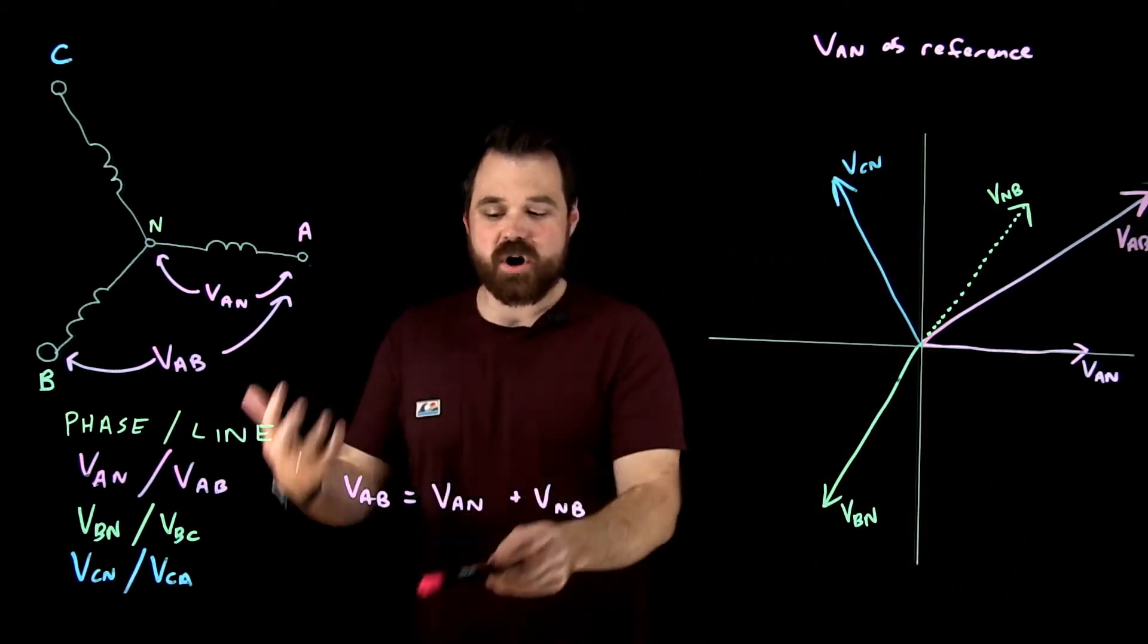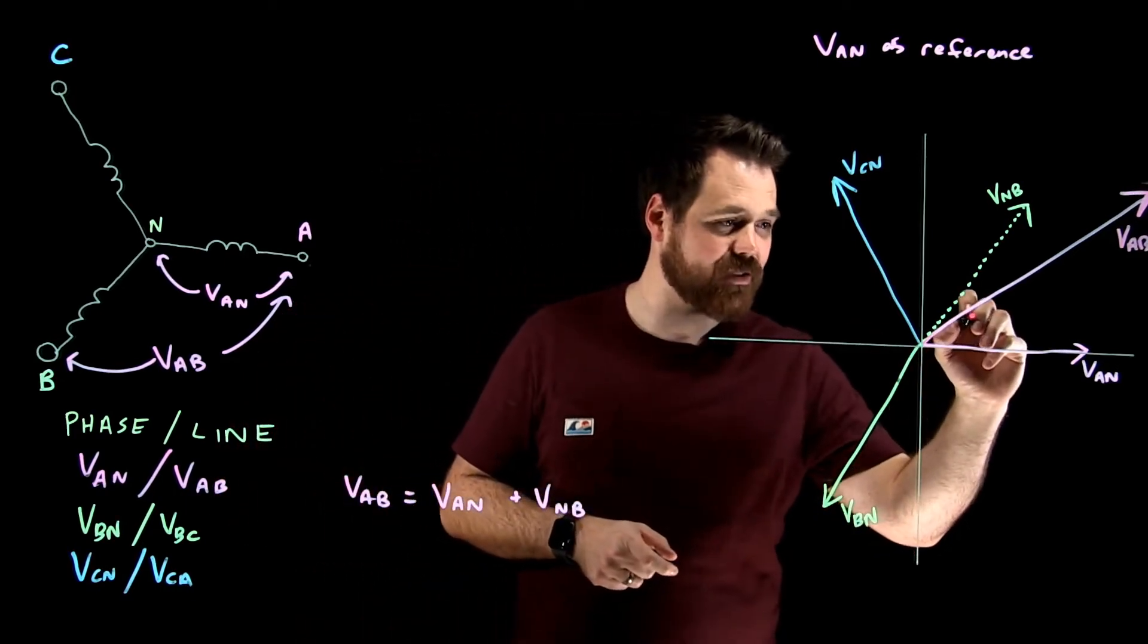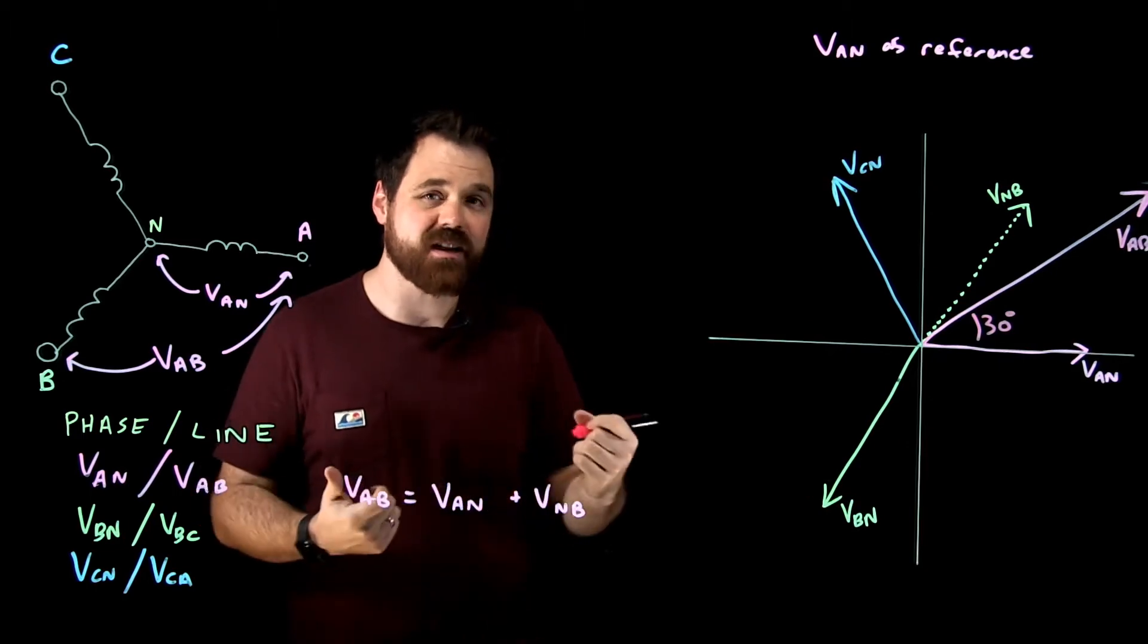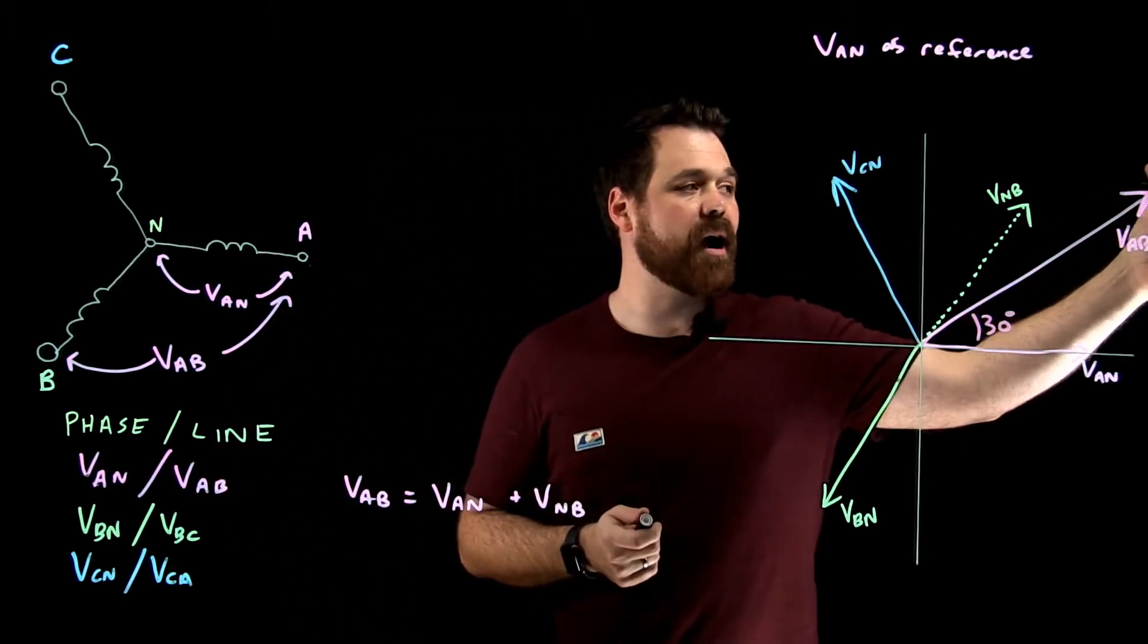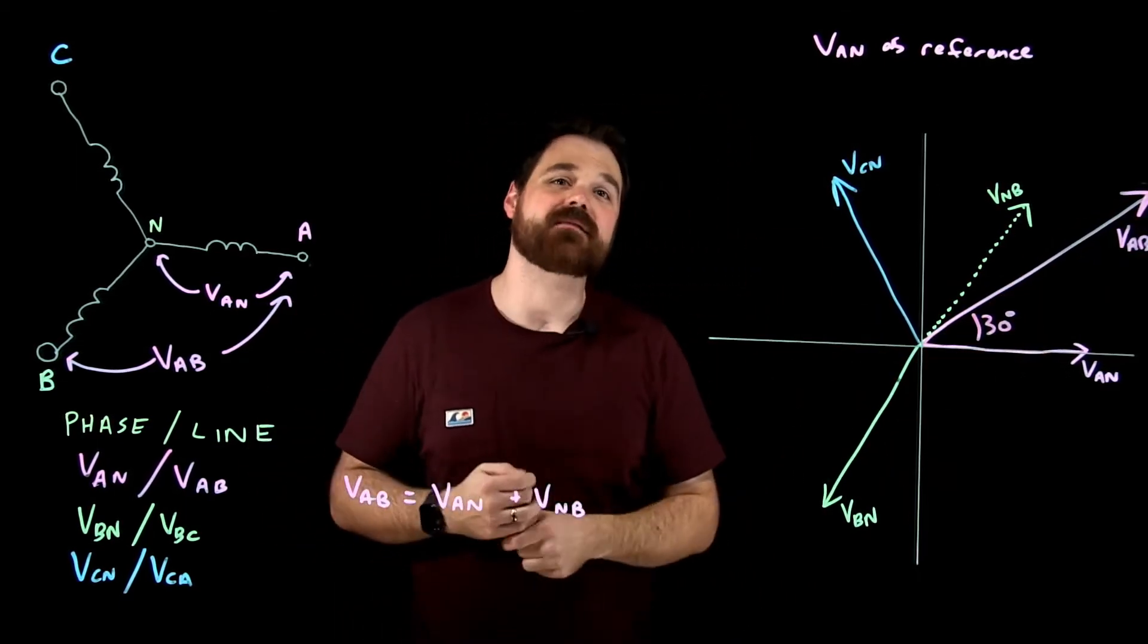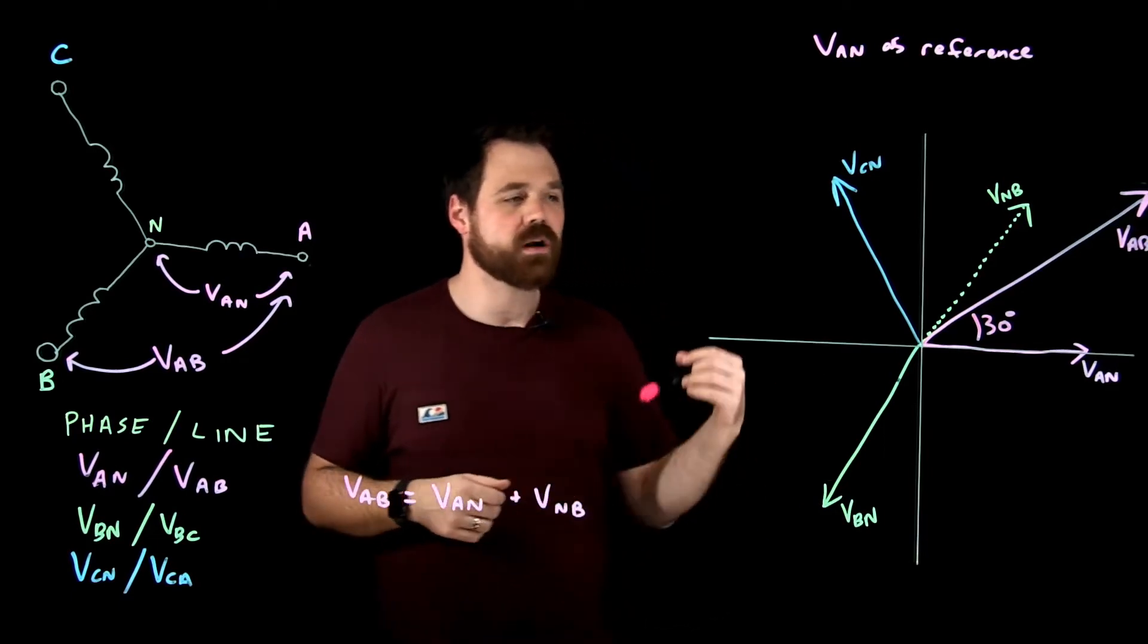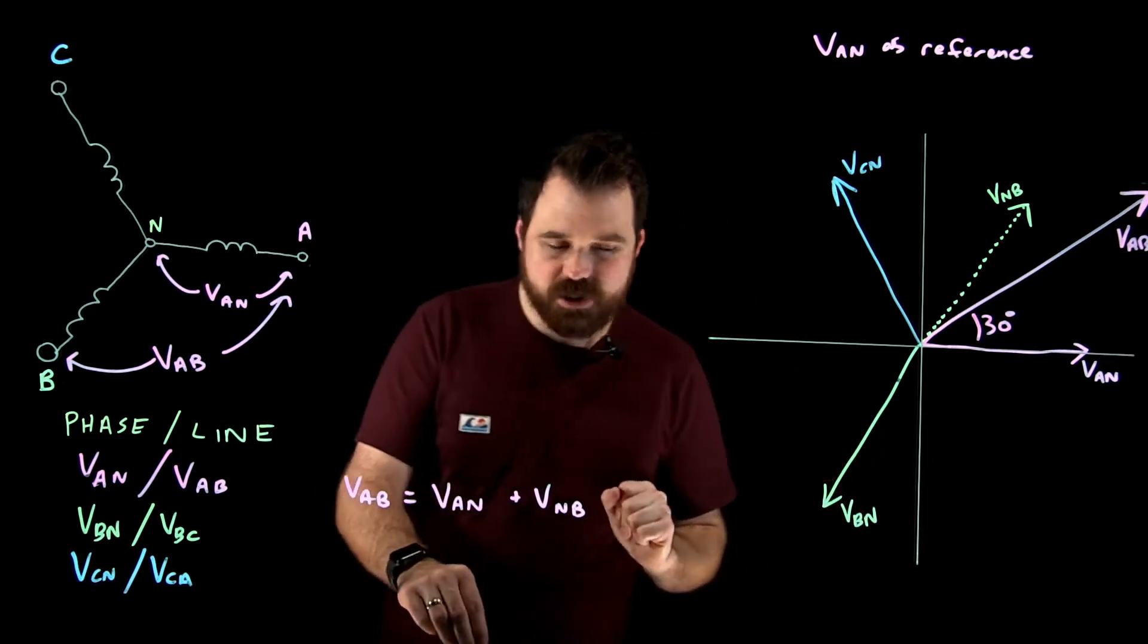Now, what you would notice when you do this math is you will notice that there is exactly 30 degrees between V_AN and V_AB. So we're going to do that math. And I have a separate video going through the actual math of these phasors. But we're just talking about relationships here. So the next one, that's V_AB. The next one would be we want to know B to C.